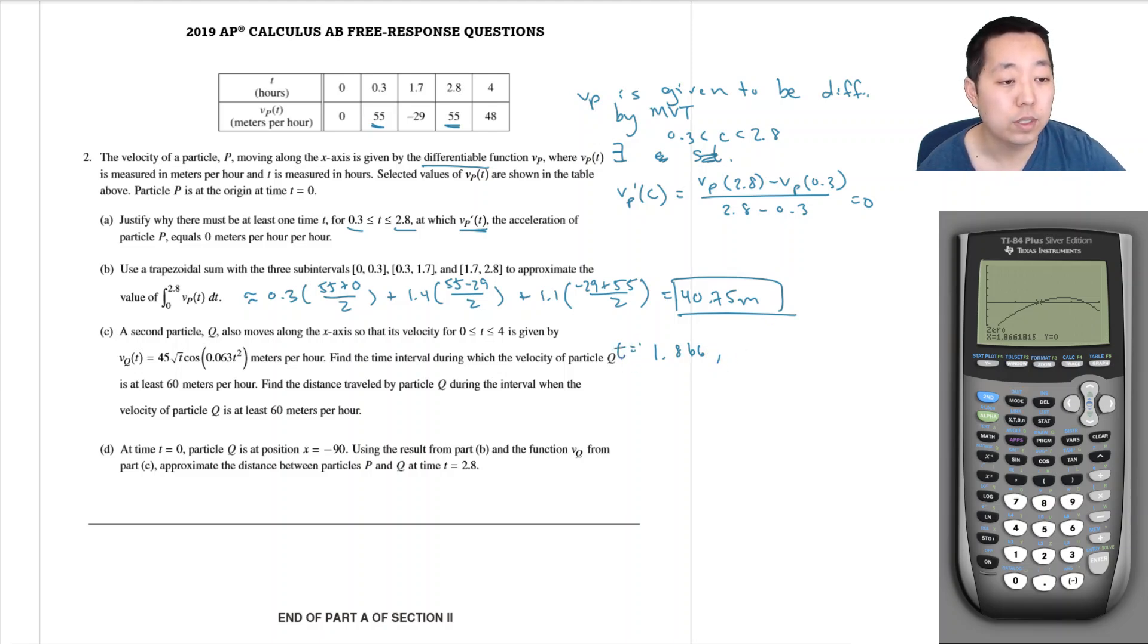Also the other time this happens - I can calculate zero. Here we'll make the right bound four, and then we'll guess at four. We'll get 3.519. So during these two time periods is when the velocity is over 60.